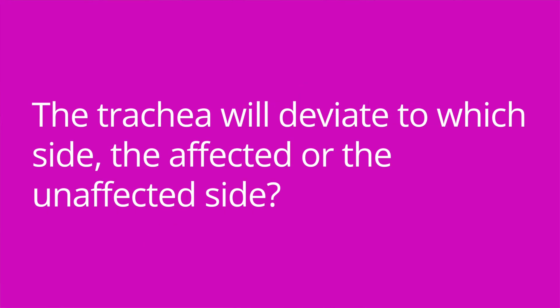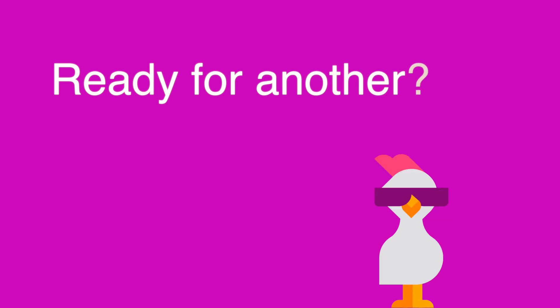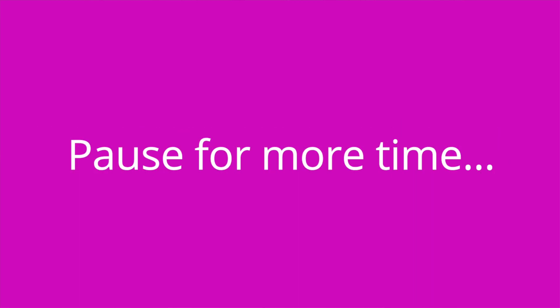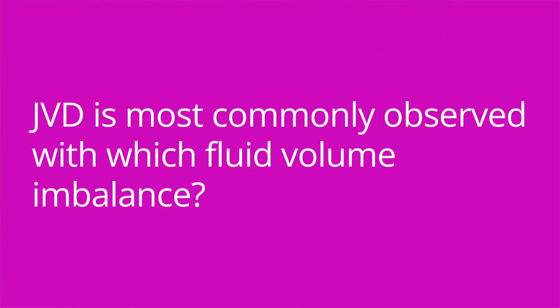Now let me ask you some quiz questions to test your knowledge. The trachea will deviate to which side — the affected or the unaffected side? The unaffected side. Which term is used to describe irregular growth of the thyroid? That term is goiter. JVD is most commonly observed with which fluid volume imbalance? Fluid volume overload.